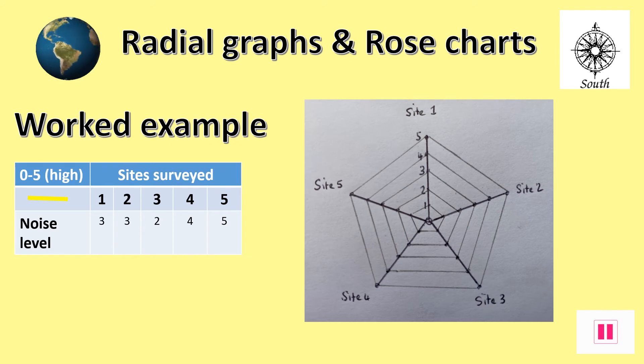We're now going to work through a typical radial graph to see how they are made. On the left, there is the data of noise levels which we will be plotting. On the right, you see a blank radial graph of five different sites and a scale from 0 to 5.